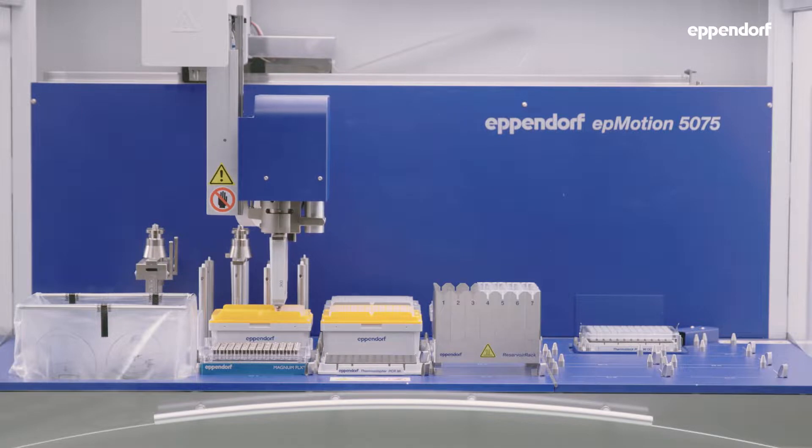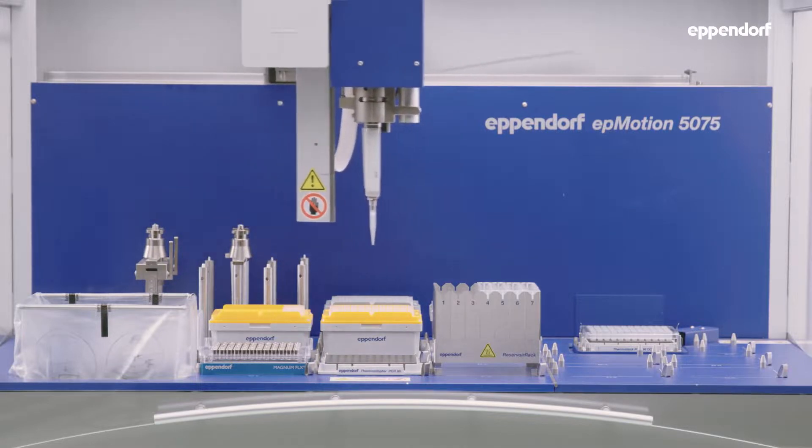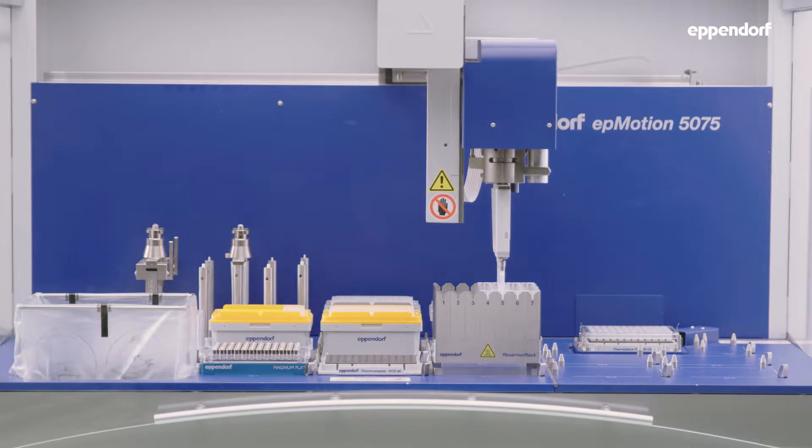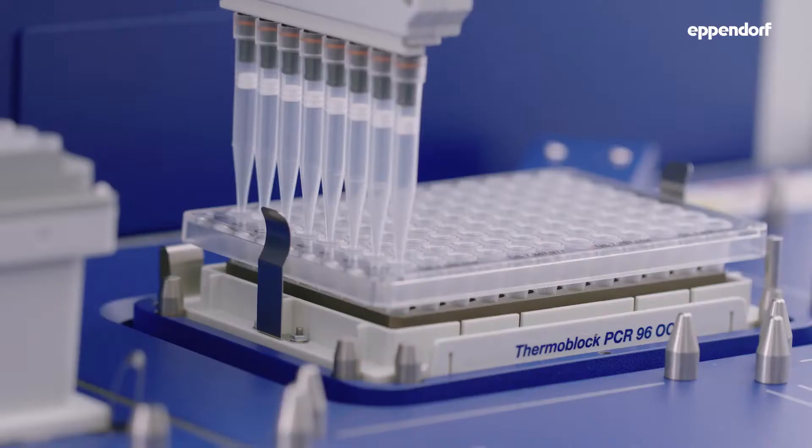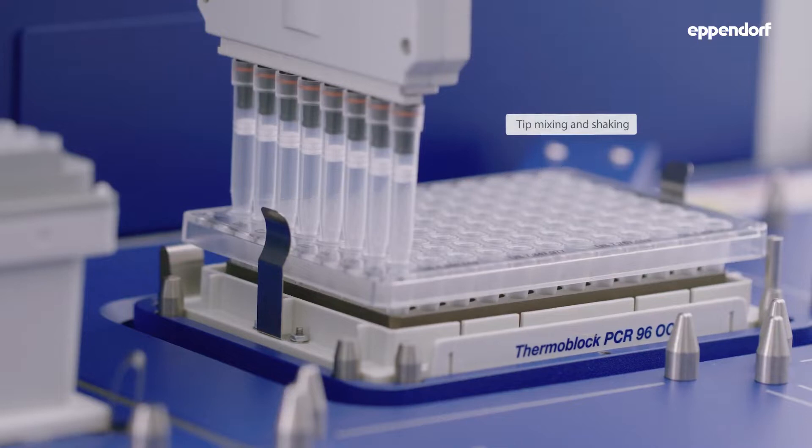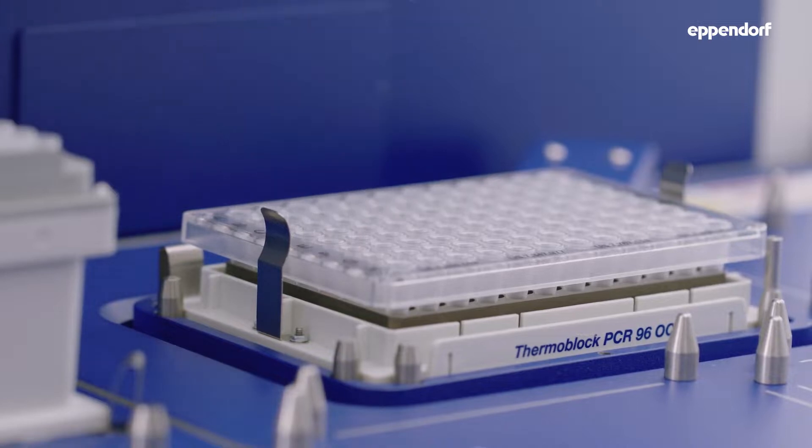Elution buffer is added to the beads using a 300 µL H-channel pipetting tool. Both components are first mixed in the pipette tip and then shaken on the thermomixer to ensure effective elution of nucleic acids from the beads.